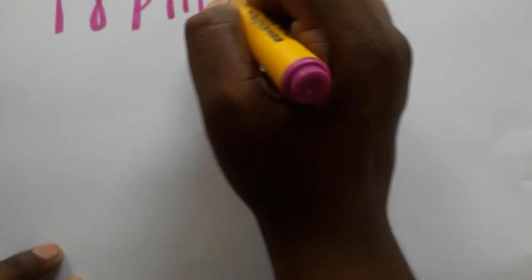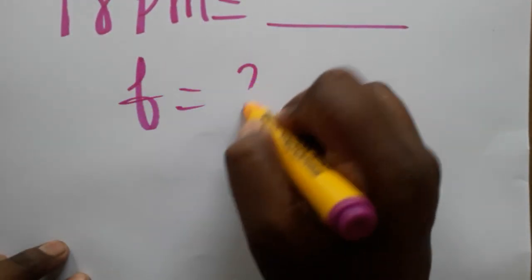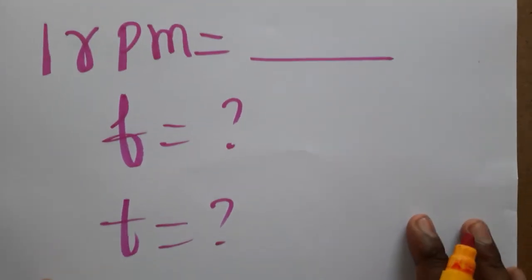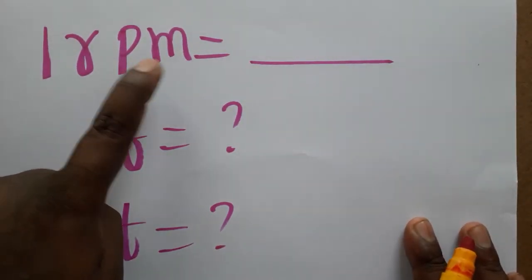So today we are going to learn 1 RPM is equal to what - the frequency of 1 RPM and time period for 1 RPM. This is what we are going to discuss. RPM is rotation per minute.